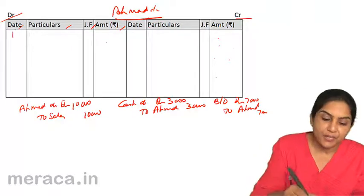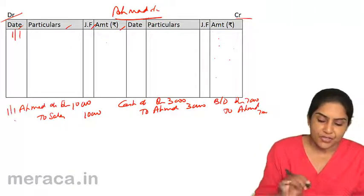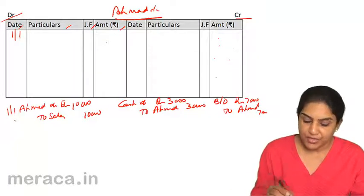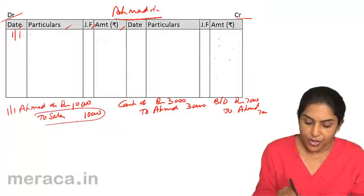We come to the debit side. We put the date, whatever date of this transaction is. And what do we say? Ahmad's account is debited on account of sales.